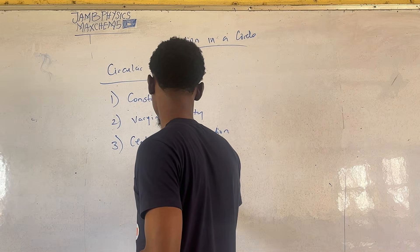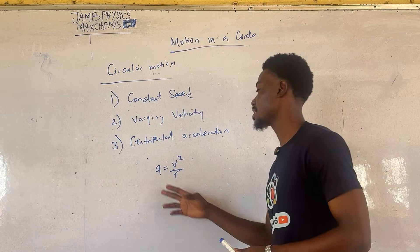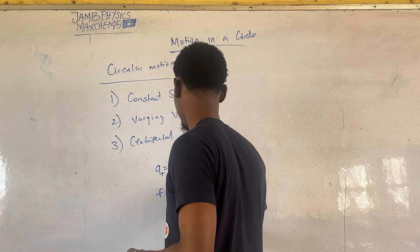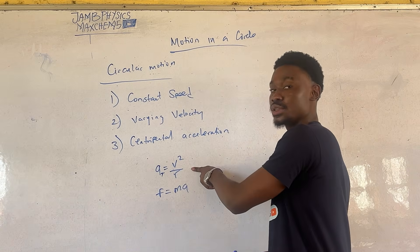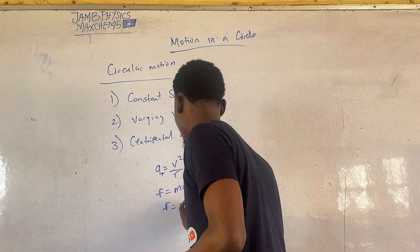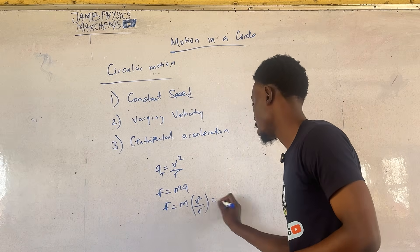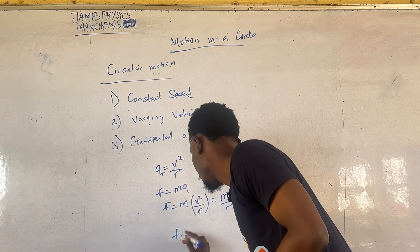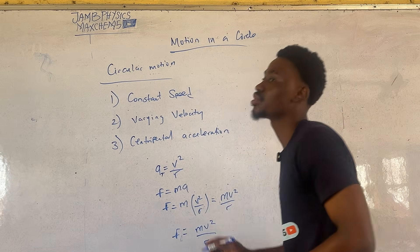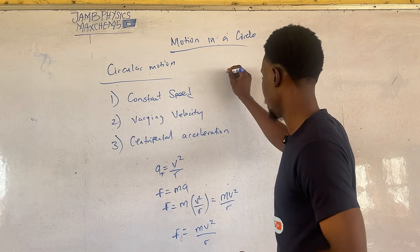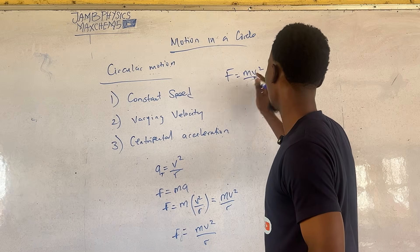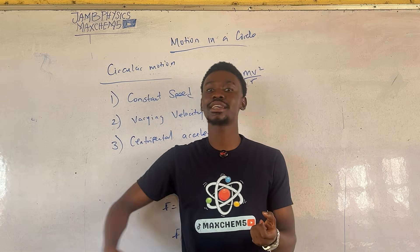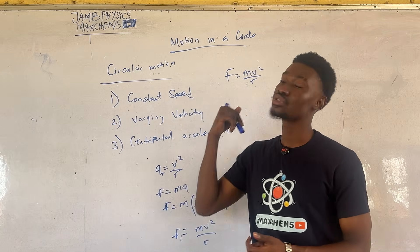Centripetal acceleration is given by v² over r. Since this is the formula for centripetal acceleration, and recalling from Newton's second law that F = ma, we can substitute to get F = mv²/r. This force in particular is called the centripetal force — it is simply a force that keeps an object along the circular path.